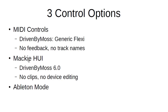The second option is a bit of a strange one. They implemented the Mackie HUI protocol, which is quite old — it was one of the first digital controllers for Mackie. It's a bit limited: for example, you get track names but only four characters, which doesn't work well for real-world use, and you don't get any device editing. With Driven by Moss version 6, I've added support for the Mackie HUI protocol. I'll look into that in a follow-up video covering how to use it with the Novation SL Mark 3.